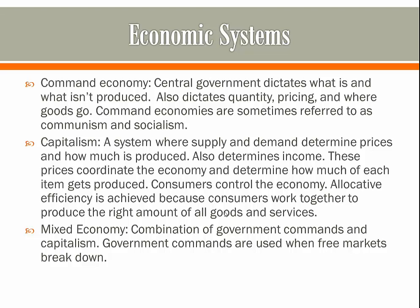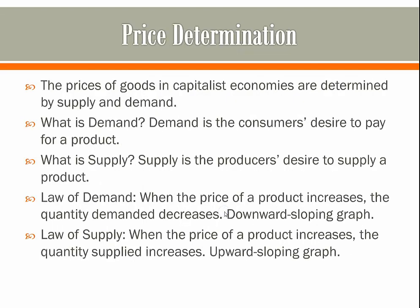Usually the government will intervene whenever the free market cannot provide something or provides too little of it. In a capitalist economy, the prices of goods are determined by the supply and the demand of the good. The demand of the good is the consumer's desire to pay for the product, and the supply of the good is the producer's willingness to supply the product.